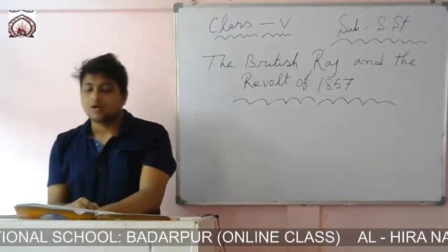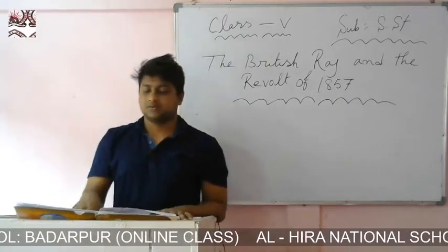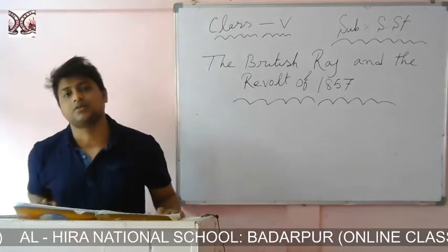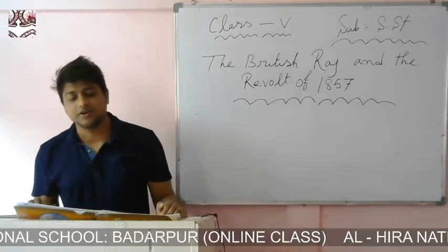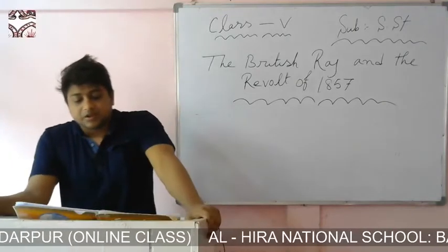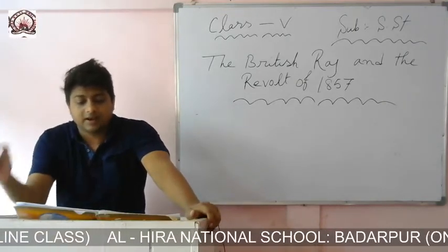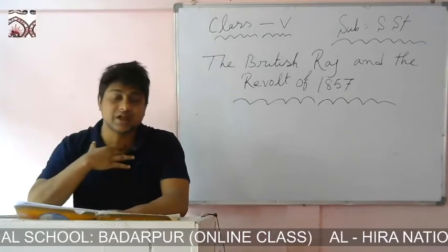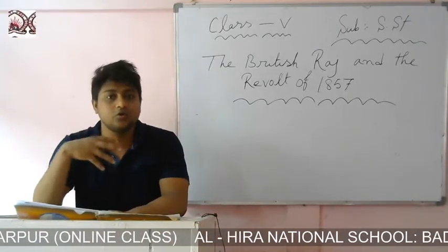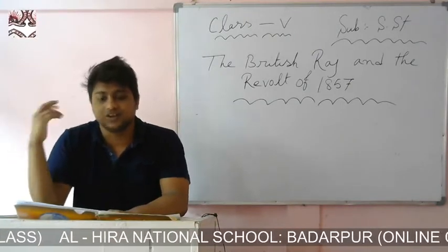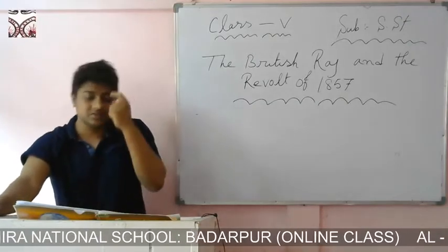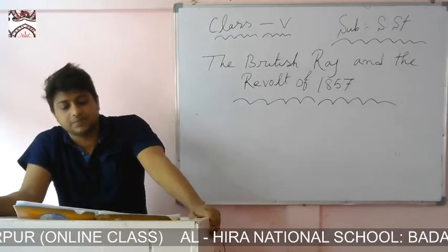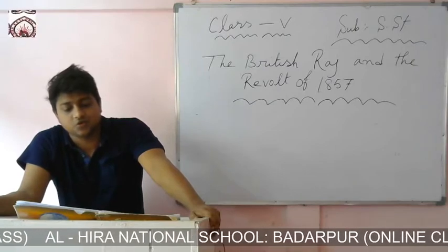The year 1857 is an important year in the history of our country - it was the time when an attempt was made by the Indians to liberate themselves from British rule. For the first time, Indians rose up against the cruel British. Some scholars called it the Sepoy Mutiny, while others described it as the First War of Independence.